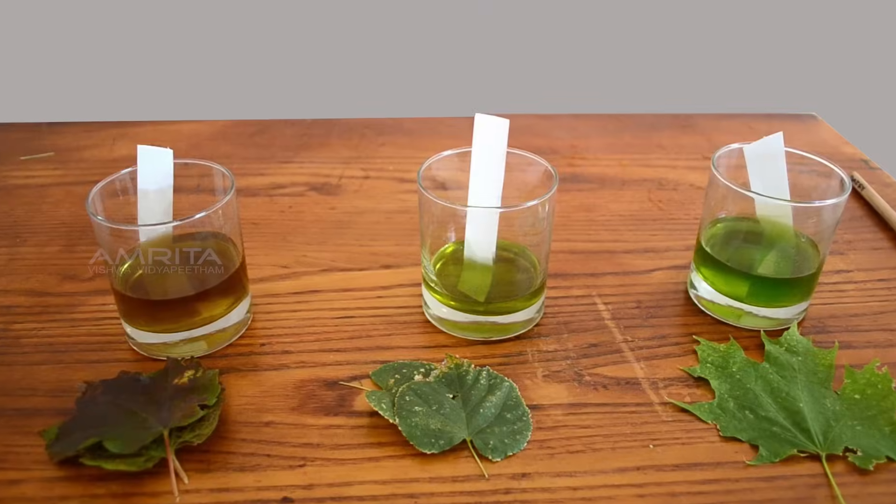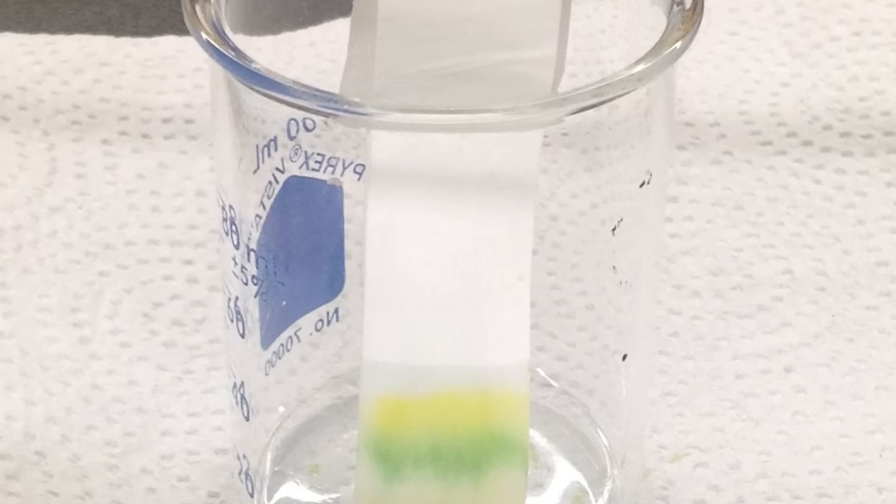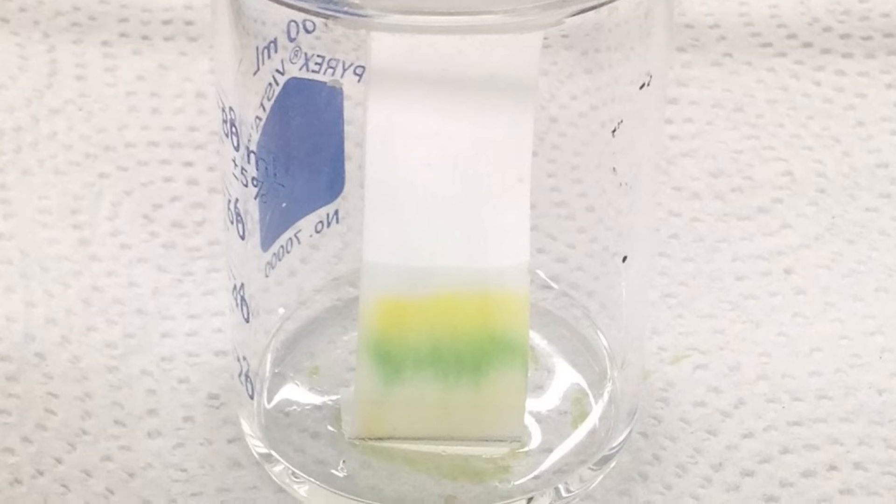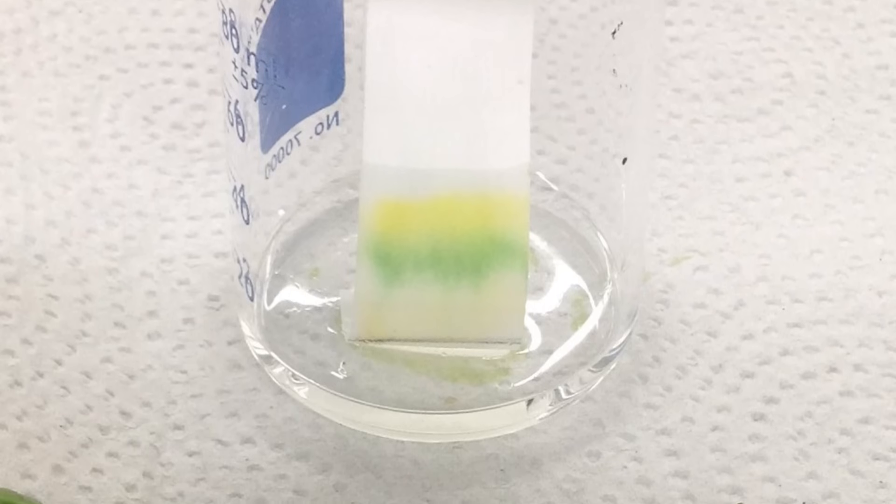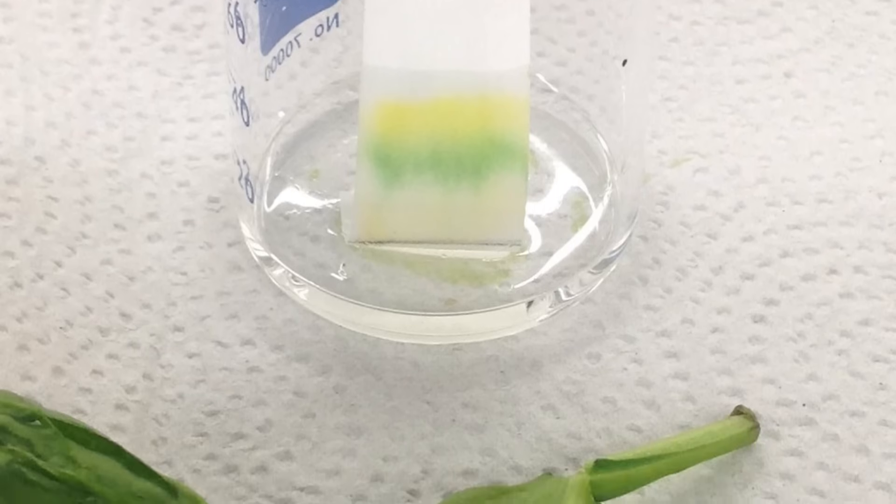Paper chromatography is an analytical method used to separate coloured substances, especially pigments. In paper chromatography, the sample is distributed between a stationary phase and a mobile phase.